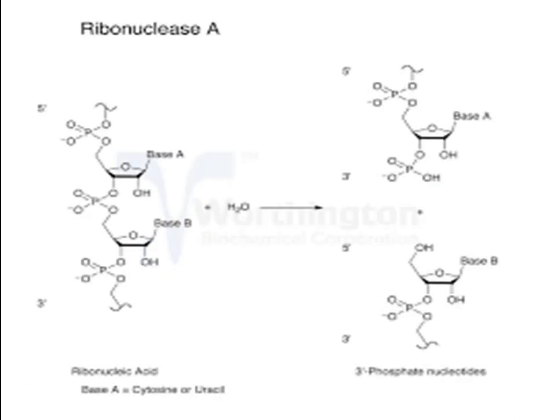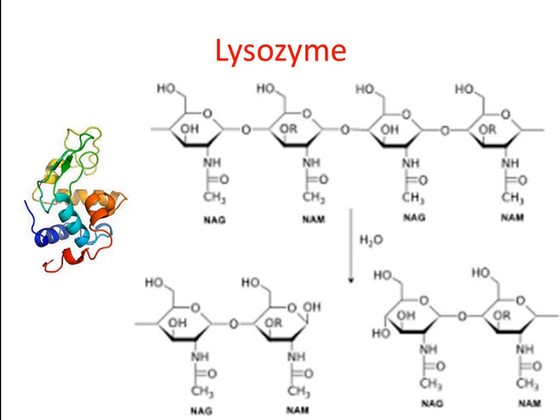Not all monomeric enzymes act on proteins. Some well-known ones hydrolyze other substrates — for example, ribonuclease, which cleaves the phosphodiester bond of ribonucleic acid between base A and base B, where base A is often cytosine or uracil. Another example is lysozyme, which cleaves the glycosidic bond of a peptidoglycan chain between N-acetylmuramic acid and N-acetylglucosamine. These are examples of monomeric enzymes which are synthesized in our body or in other organisms and play a major role in digestion.